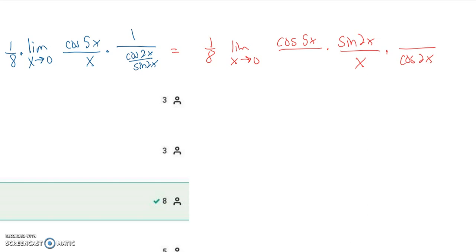To apply the squeeze theorem, we need the argument to equal 2x so the angles match. Since I didn't multiply the denominator by 2, I multiply the numerator by 2 and pull it out front as a constant. Now evaluating the limit: out front we have 2/8 which is 1/4. Plugging in 0 gives 1 for cosine, 1 for the squeeze theorem term sine(2x)/(2x), and 1 over cosine(2x) becomes 1 over 1. One-fourth times all those ones gives a final answer of 1/4.